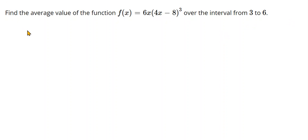In this first example, we have a function inside of a function, so I'm thinking we're going to have to use u-substitution to integrate this. So I always like to start with our formula. f of x bar would be the average value of 1 over b minus a times the integral from a to b of f of x dx.